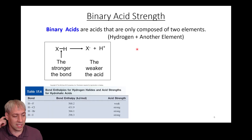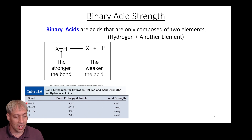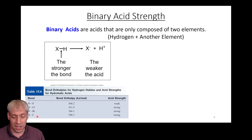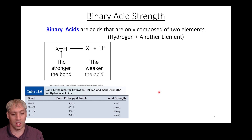Going down the hydrohalic acid series: HF has a strong bond, HCl a weaker bond, HBr weaker still, HI even weaker. That directly translates to acid strength. HF is the only weak acid with a lower Ka value, whereas HCl, HBr, and HI are on our strong acids list — three of the six strong acids. They're strong acids because the bond is so weak.